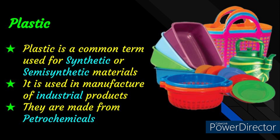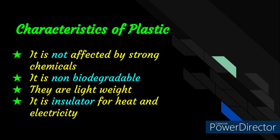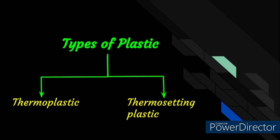Plastics are polymers like synthetic fibers and they are made up of chemicals of petroleum origin, called petrochemicals. Characteristics of Plastics: Plastic is not affected by any strong chemicals, plastic is non-biodegradable, they are lightweight, and plastic is an insulator for heat and electricity.